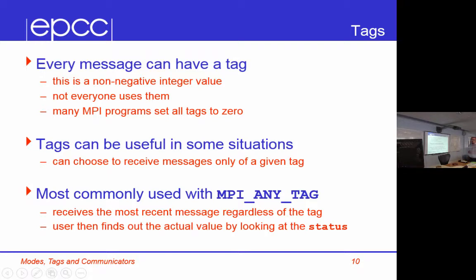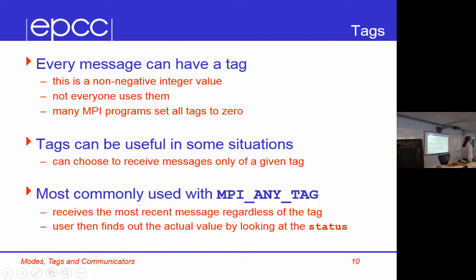Tags: every point-to-point message can have a tag, and they all do because the tag is mandatory in the send call. You can set them all to the same value — zero, for example. It's a non-negative integer value. There is a maximum value of at least 32,000, so you've got quite a lot to play with if you want to use them. Not everyone does use them. There are some good use cases and some terrible use cases.